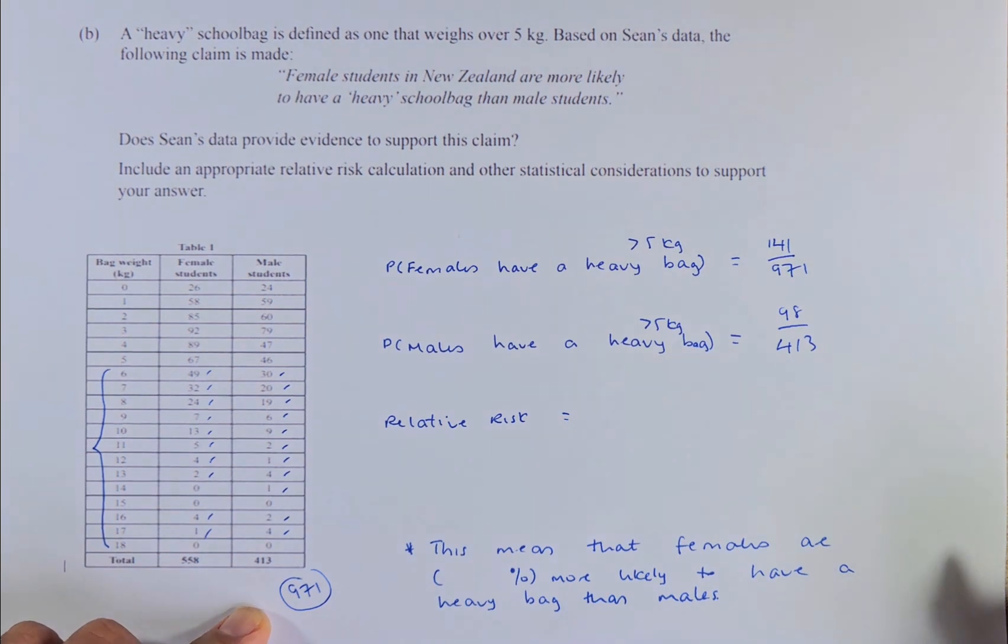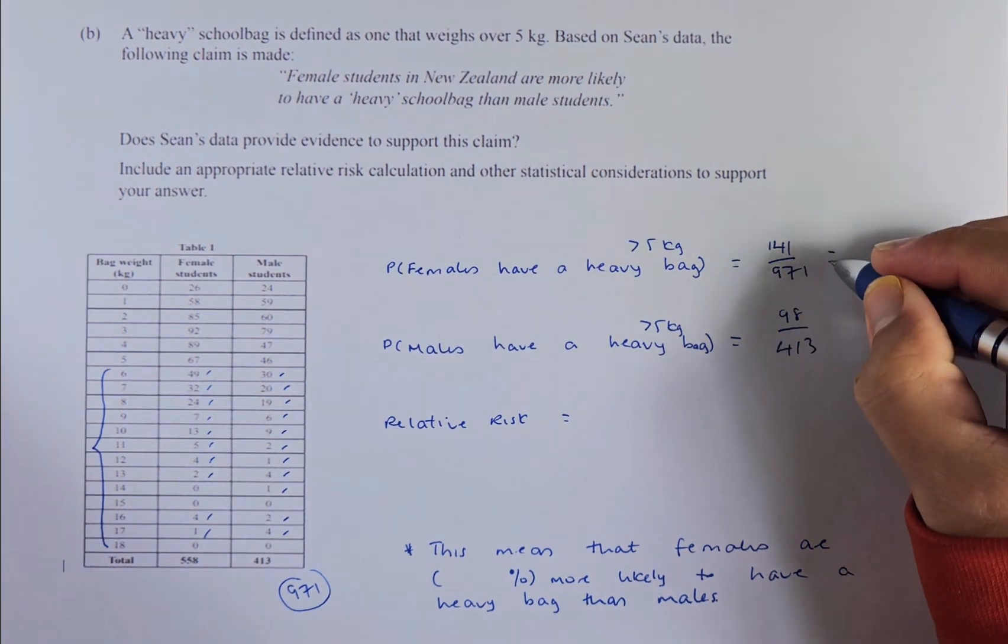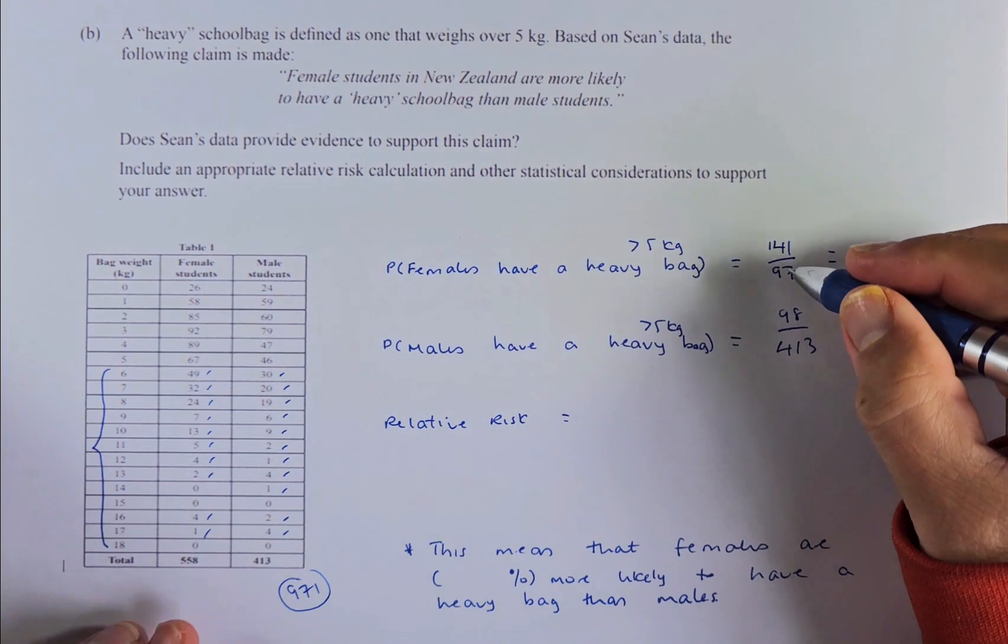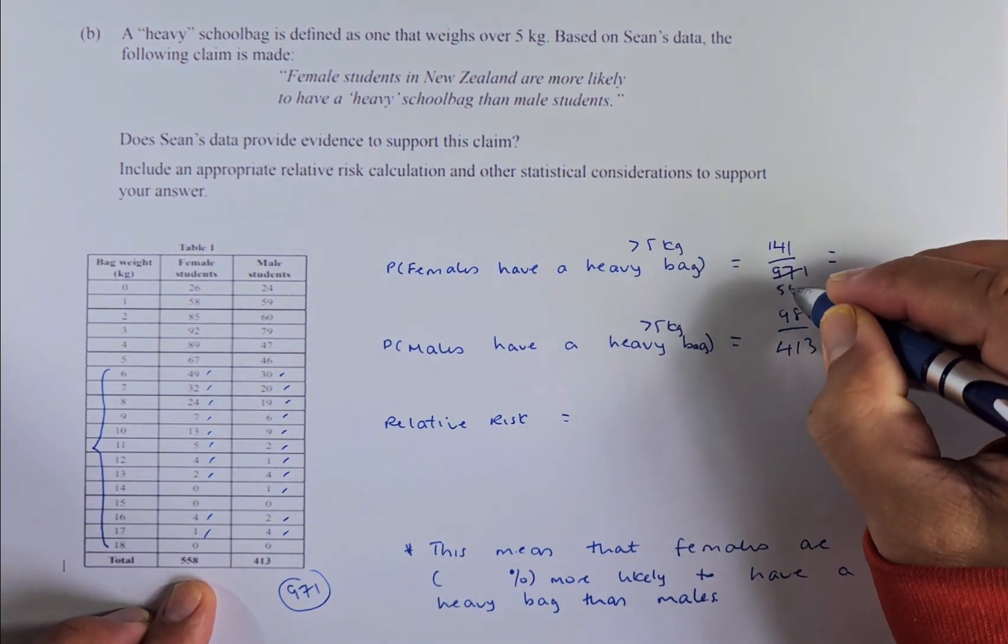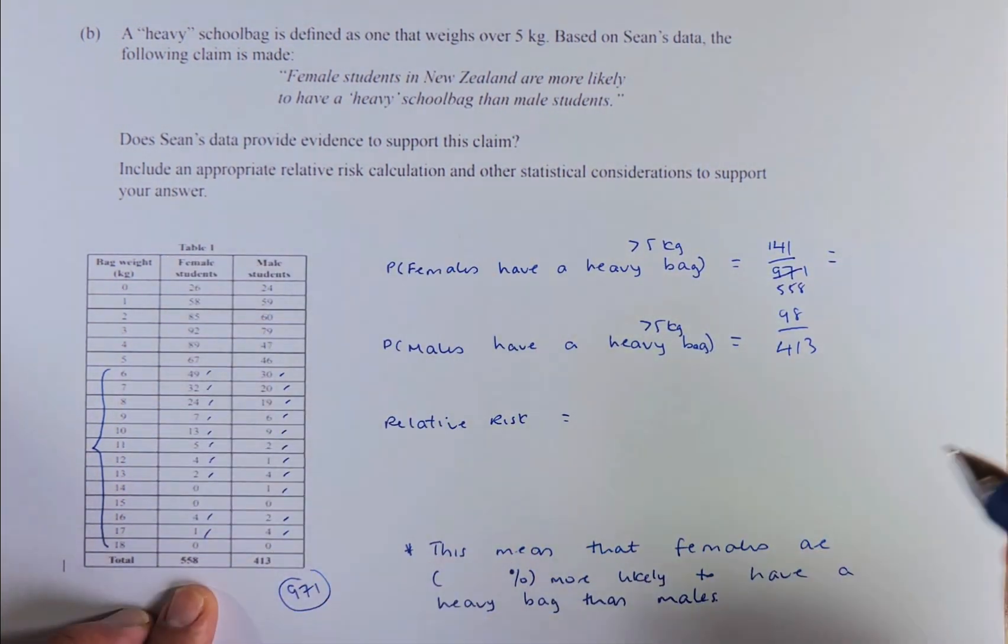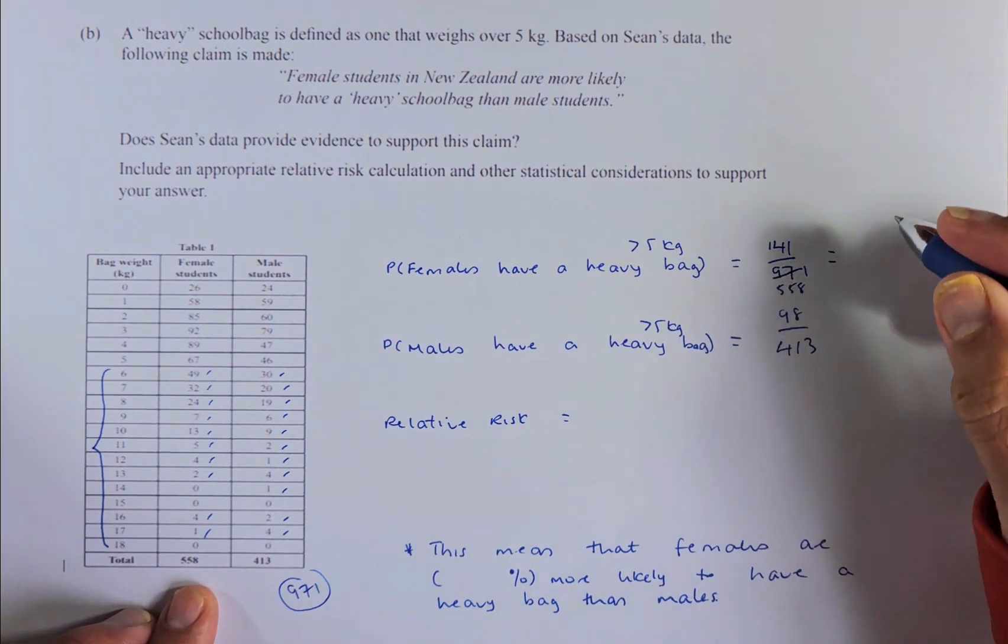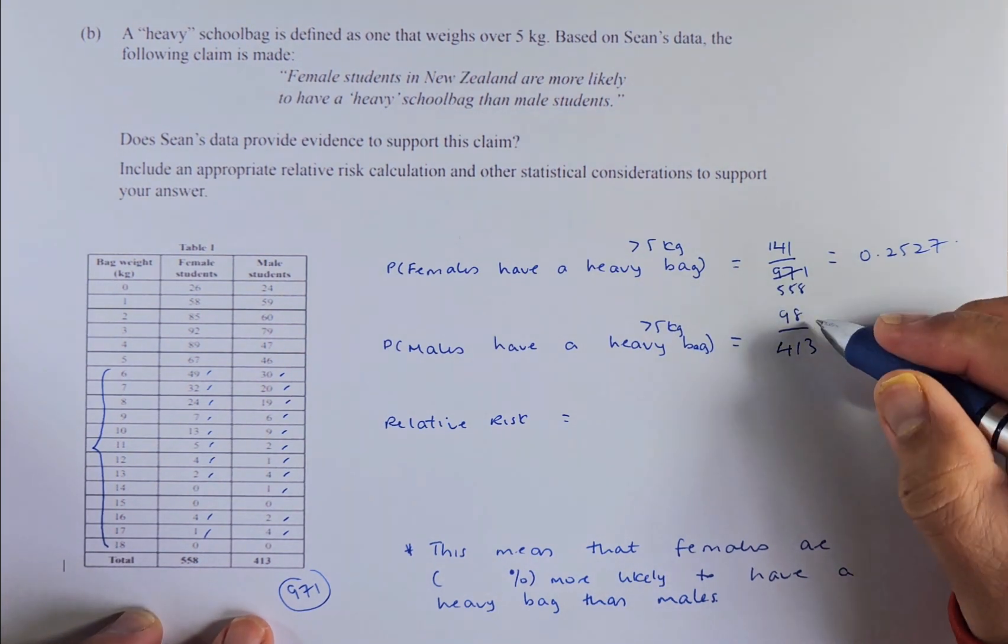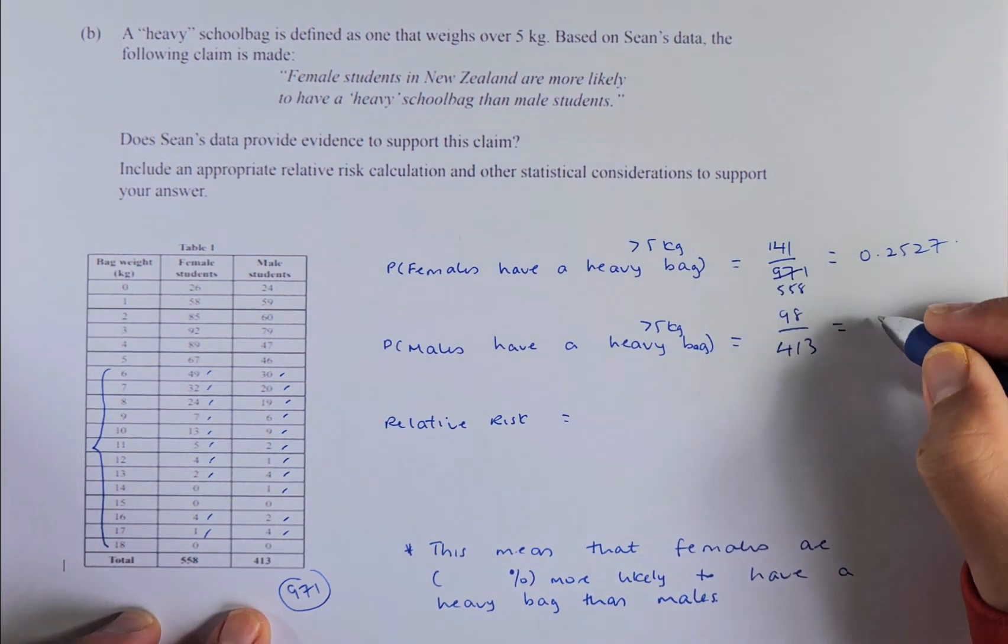So now to get the relative risk. So if you calculate this number, 141 over 971, sorry, over 558. That is a mistake because the total of females is 558. So 141 over 558 will give us 0.2527. And for the male, 98 over 413 is going to be 0.2373.